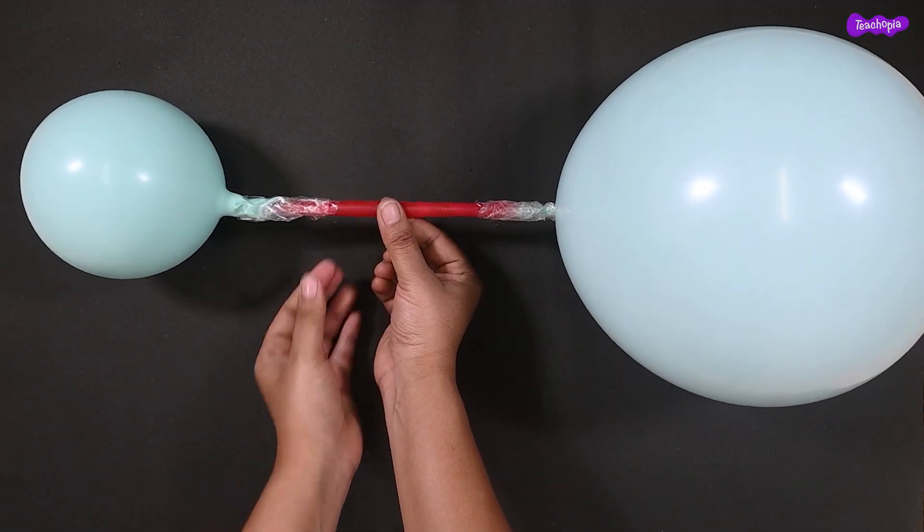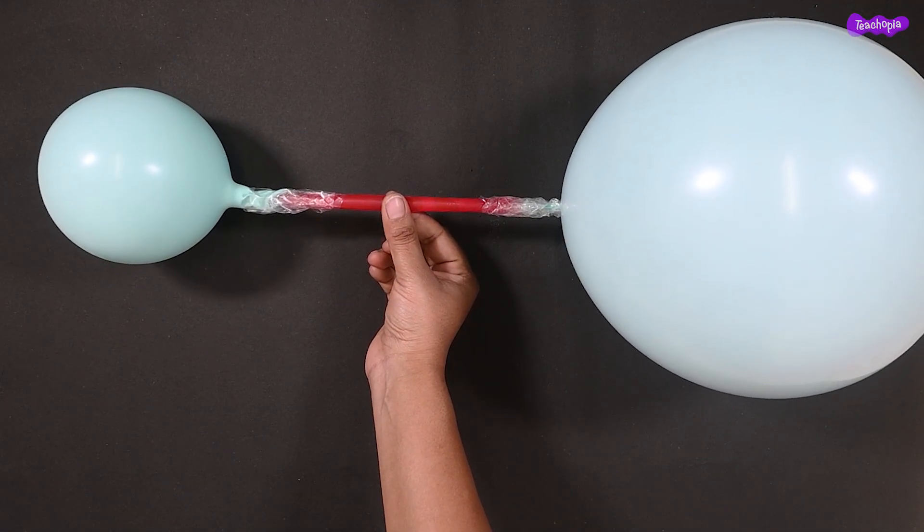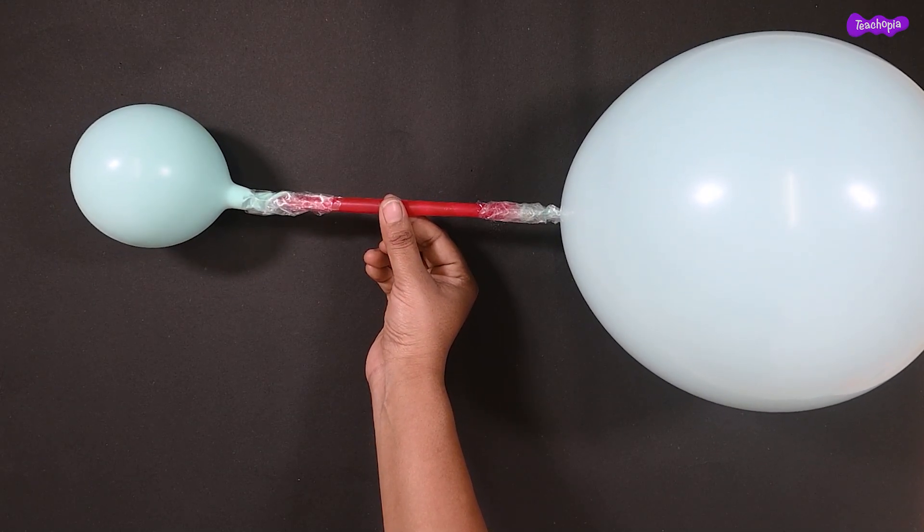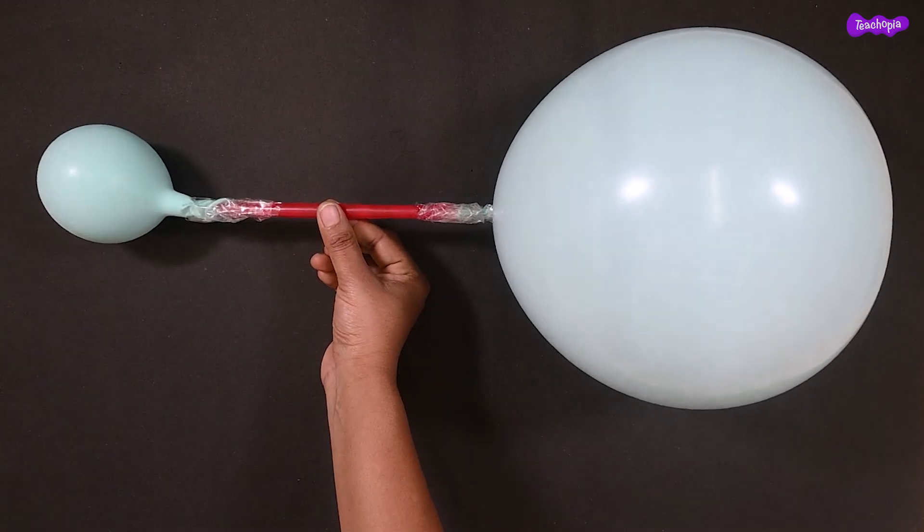Allow air to pass through the straw by releasing your hand. Now you can observe that air is moving from the small balloon to the big balloon.